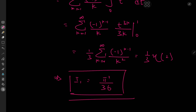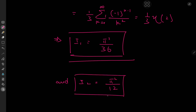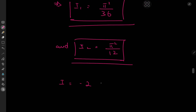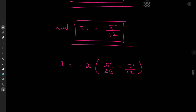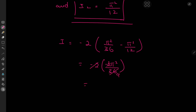Using pretty much the same techniques you can evaluate I_sub2, and you'll get I_sub2 equal to exactly pi squared over 12 — that's eta of 2. Combining our results, the target integral I equals negative 2 times I_sub1 minus I_sub2, which is negative 2 times pi squared over 36 minus pi squared over 12. The negative signs cancel out and after simplification we get pi squared over 9.